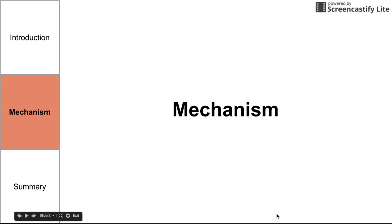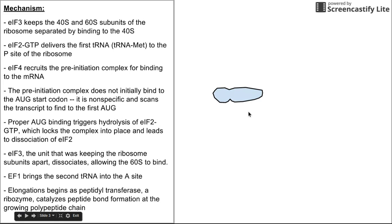We're going to jump right into the mechanism of translation initiation. This is the general mechanism of translation initiation. We start with the small unit of the ribosome, the 40S subunit.